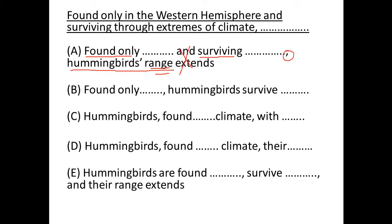Option B says 'found only in Western Hemisphere, comma, hummingbirds.' Now hummingbirds can be found in the Western Hemisphere — that makes sense. Let's keep option B.